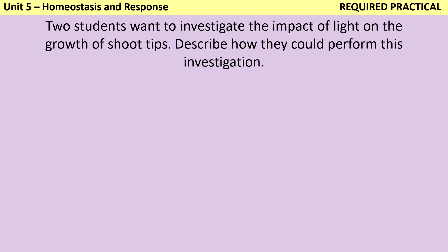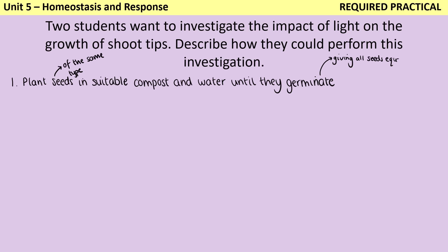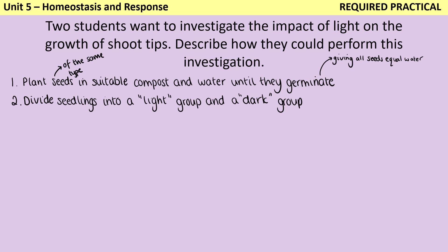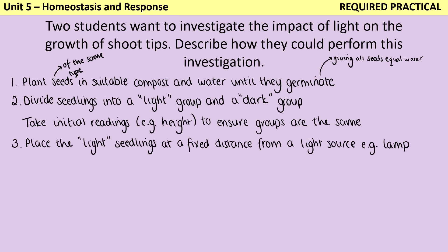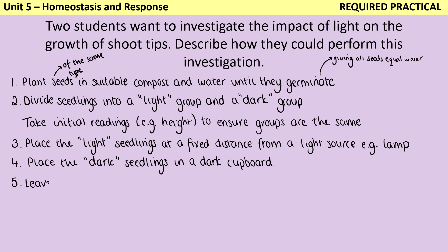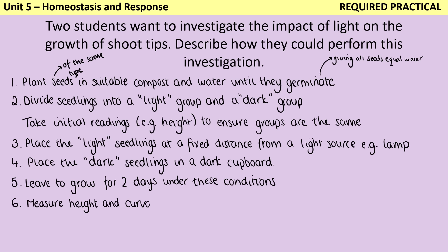It's important to control variables such as using the same species of seed — usually mustard or cress — sowing them all on the same day, making sure there are the same number of seedlings in each dish, and giving them the same amount of water and either a nutrient medium or cotton wool. For the method, we need a whole bunch of identical seedlings, so plant out a load of seeds of the same species and water them all until they germinate. Then divide them into a light group and a dark group, taking initial measurements to make sure the two groups are as close to identical as possible. Put the light seedlings at a fixed distance from a light source and the dark seedlings in a dark cupboard. Leave them to grow for a couple of days, then measure the height and curvature to see whether there are any differences between the groups.